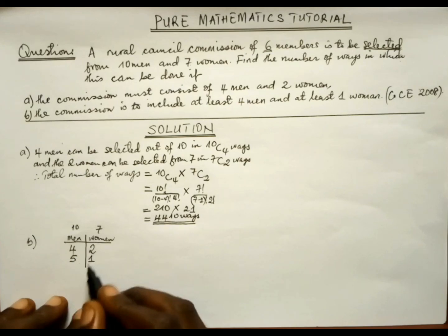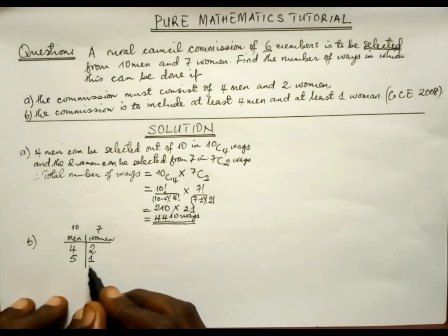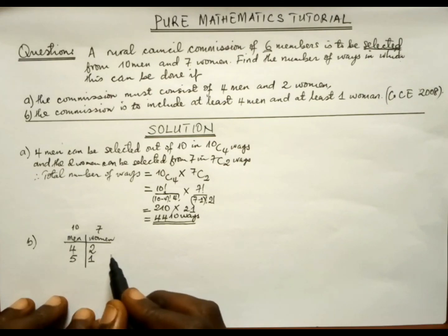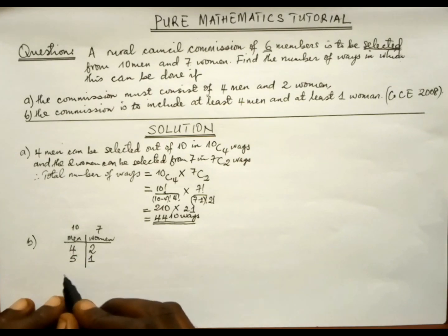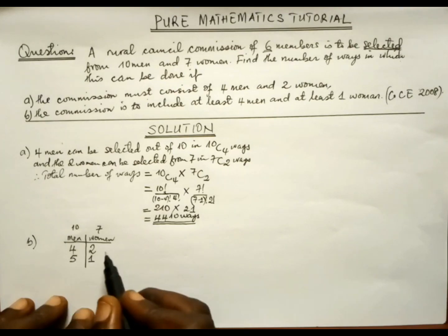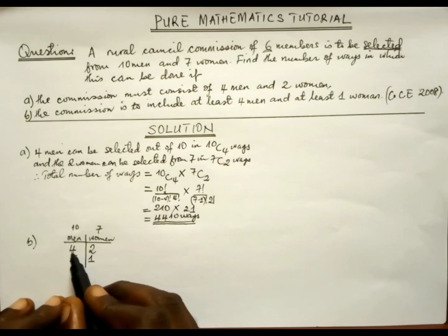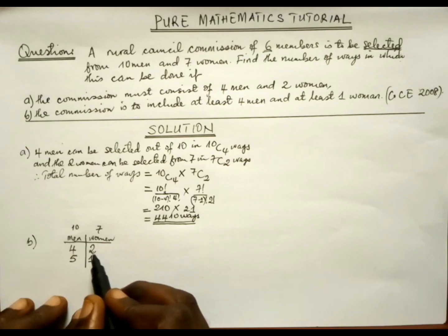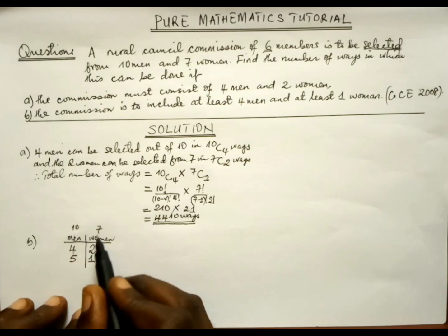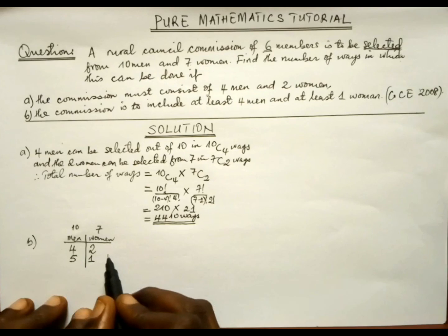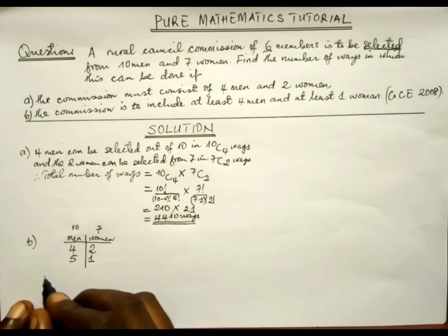On this table, when lining up all options for combinations, moving across you multiply because options are linked by 'and,' and moving down you add because options are linked by 'or.' So we interpret this as: four men out of ten AND two women out of seven, OR five men out of ten AND one woman out of seven.